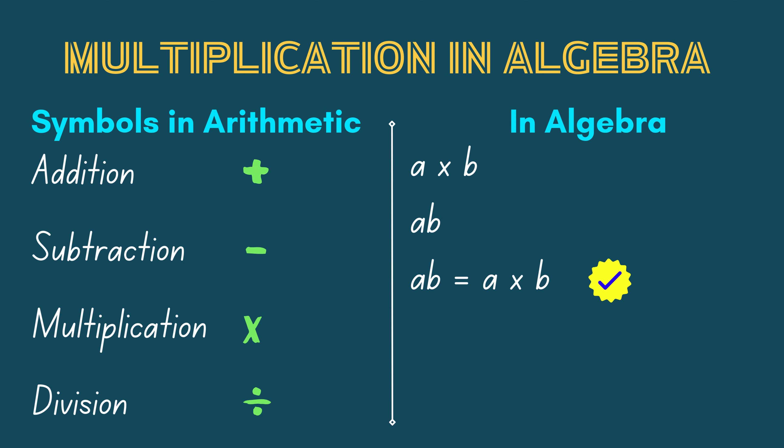So, once you see no operator between variables or coefficient and variables, then you just assume they're being multiplied. In short, multiplication is implied.